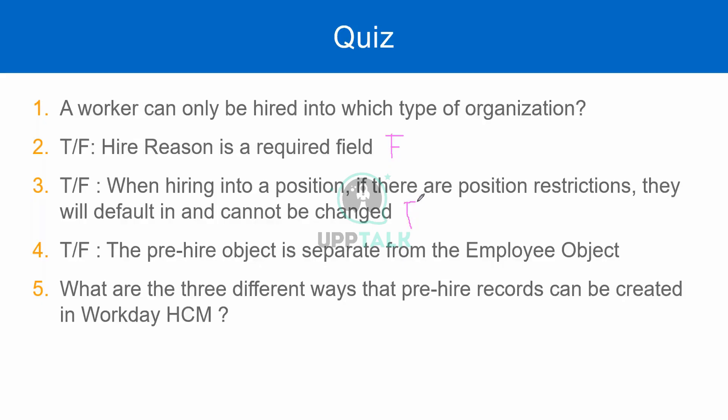The answer is false. Based on what you saw — and maybe based on what you did, like when you did your assignment — you could see that in the Hire Employee screen, you could still change the location, the job profile, and whether it's full-time or part-time. Those things you could change, which is why you said false. That is correct — the right way of answering.